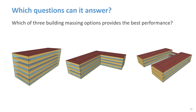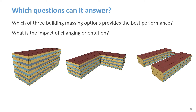Another question: which of three building massing options provides the best performance? Or a related question: what is the impact of changing orientation? A simple box model is great for exploring the relative performance of different design concepts. How much does the performance vary between options? The simple box model can help answer that using whatever information is known at the time, like perhaps just the building location and the occupancy type, and then show which features have the biggest impact on performance.